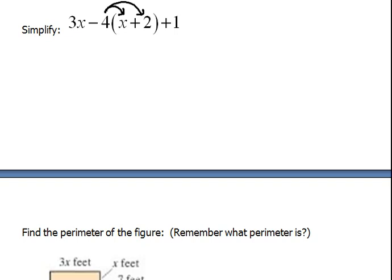We're going to distribute but we have our 3x first. Now negative 4 times x is negative 4x. Negative 4 times 2 is negative 8 and then we also have our positive 1.